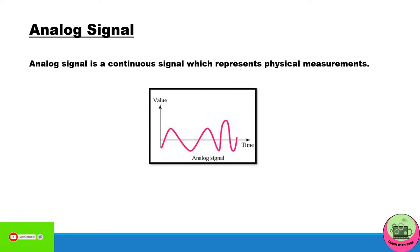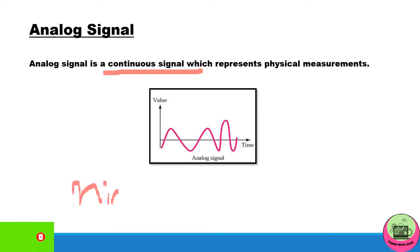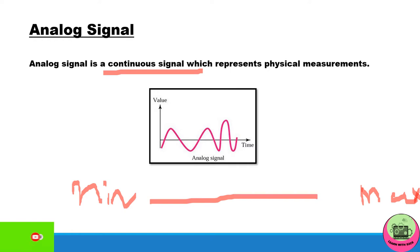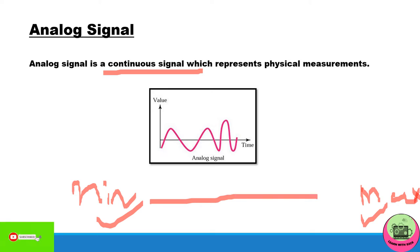An analog signal is a continuous signal which represents physical measurements. A continuous signal means there is a minimum and maximum value fixed, and the analog signal can take any infinite values between this minimum and maximum range. You can see in the graph how it has been plotted.